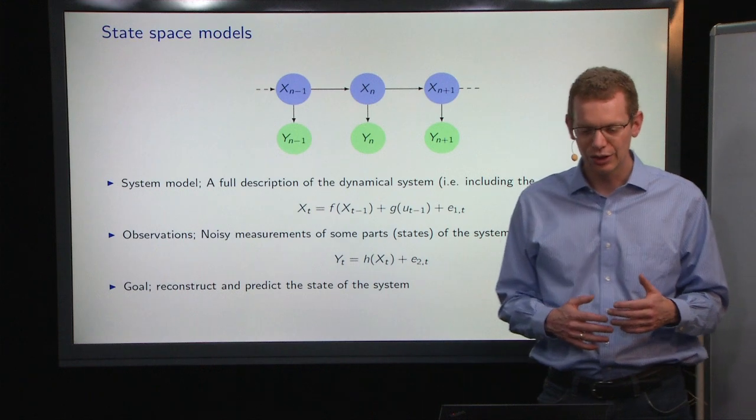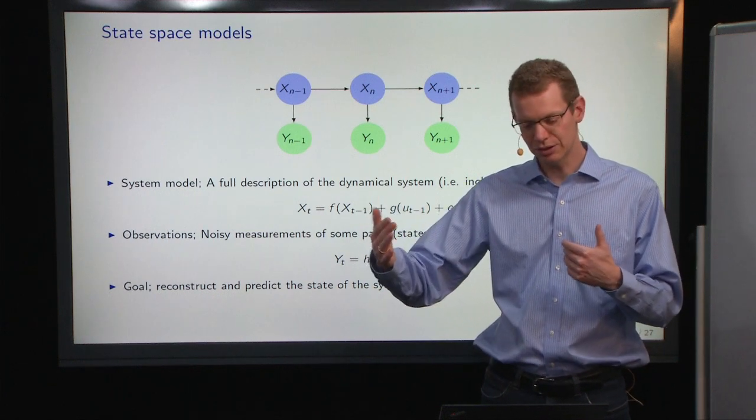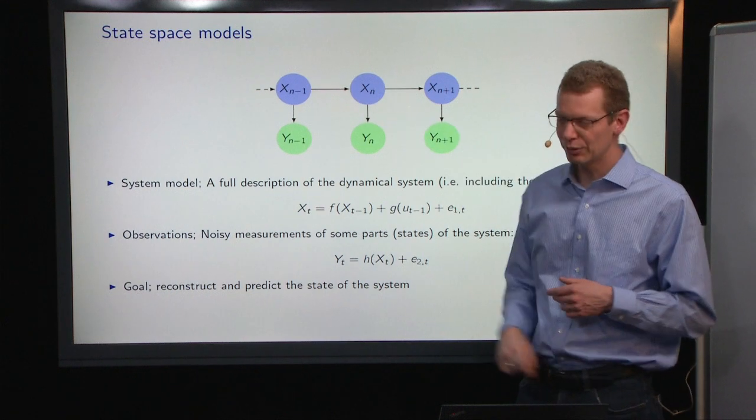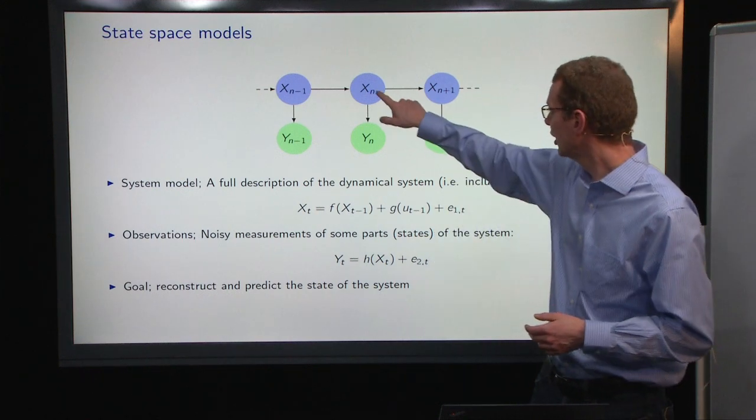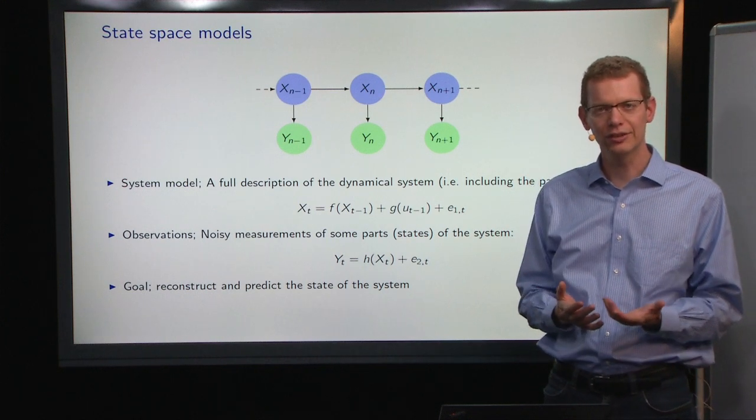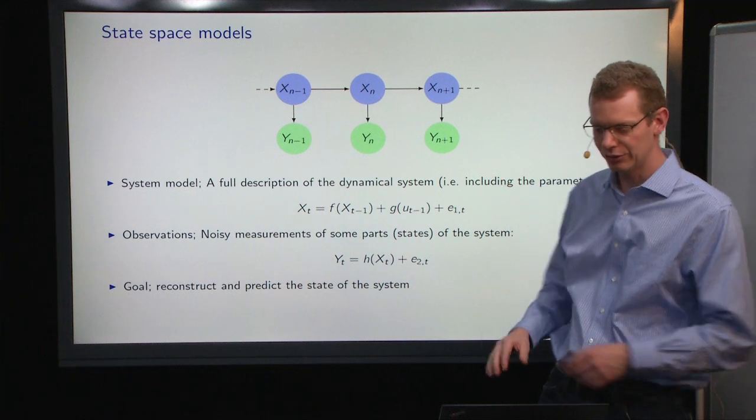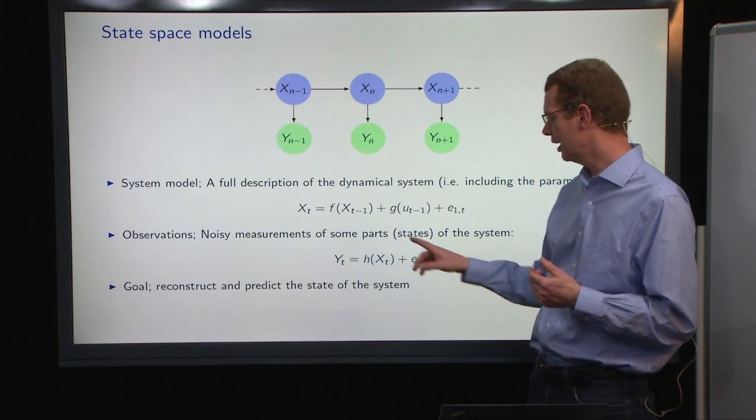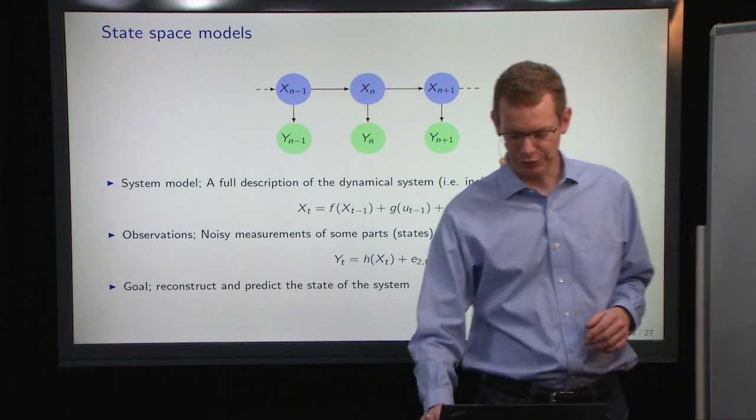And the goal here is to reconstruct, as in update our estimate of where we are, given new observations. So whenever we observe y_n, we want to say, well, then what more do we know about the state of the system at that time? But we also want to make predictions of the future. Since this is a linear time series course, we will have these as only linear functions. The big difference to what we've done so far is that it only depends on the previous state, which means it also fulfills the Markov property.